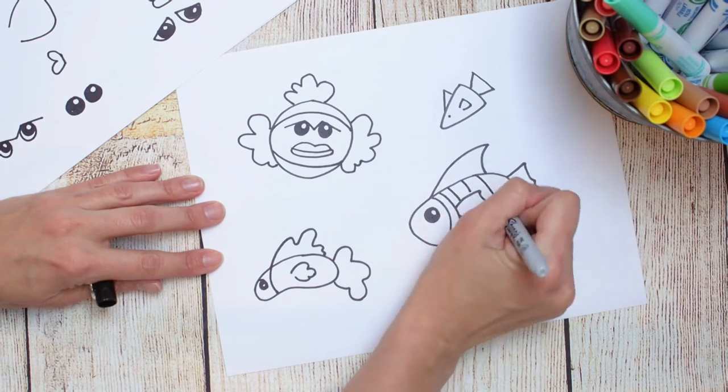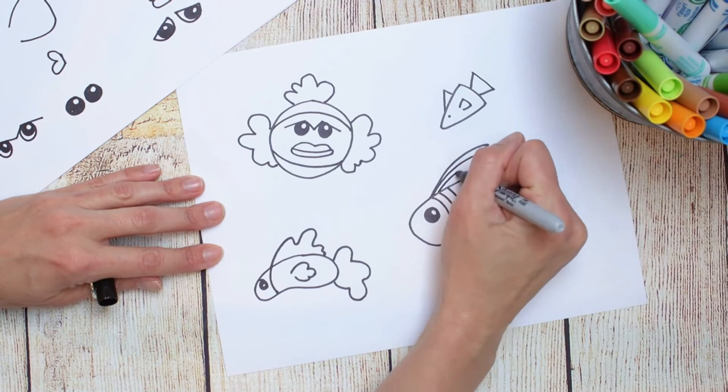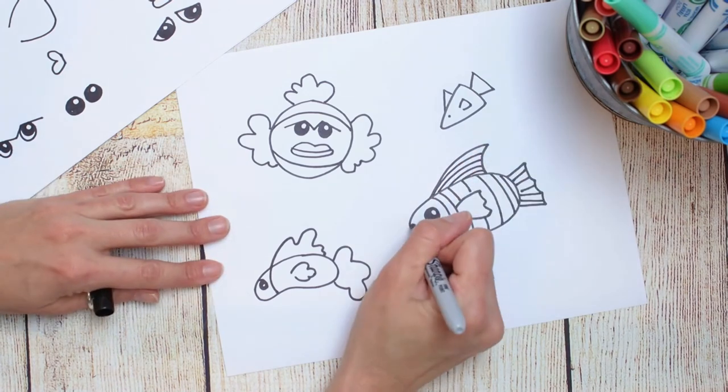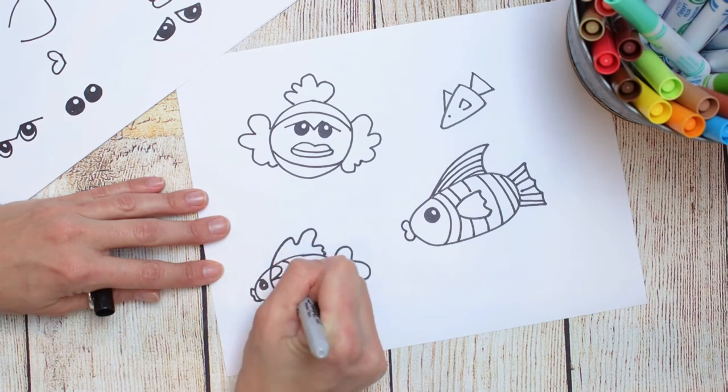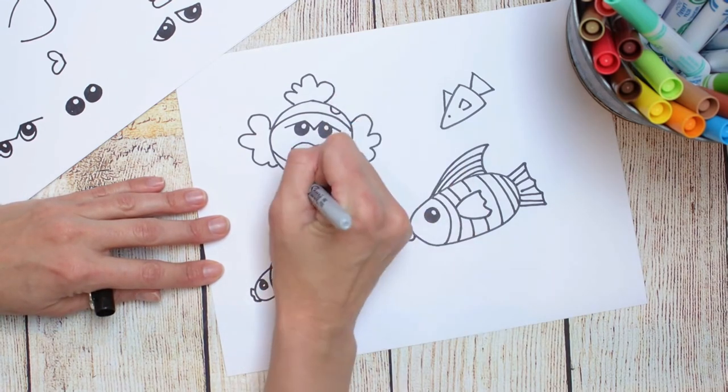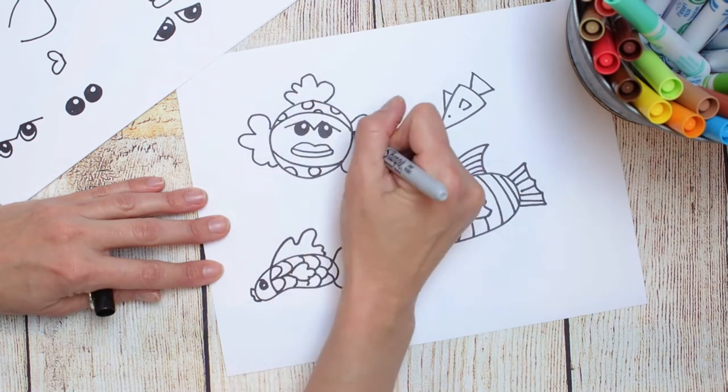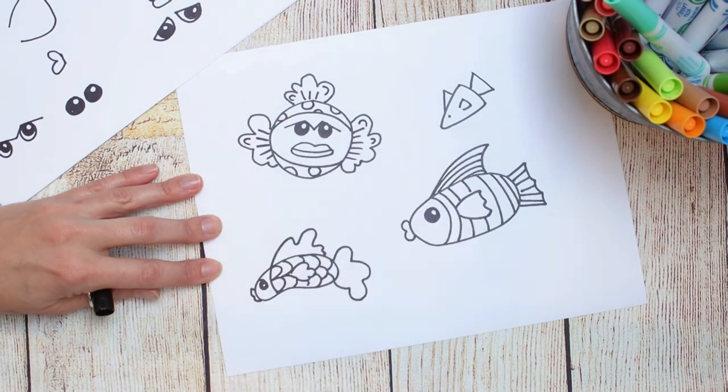Once you have your basic shapes down, go ahead and start adding in some fun patterns. They can be realistic if you want to go more towards scales or some patterns you might see in real fish, or they can be completely imaginative, just made up. You can have polka dotted, striped, whatever kind of fish you like and make you happy. But go ahead and add some details to those fish now.